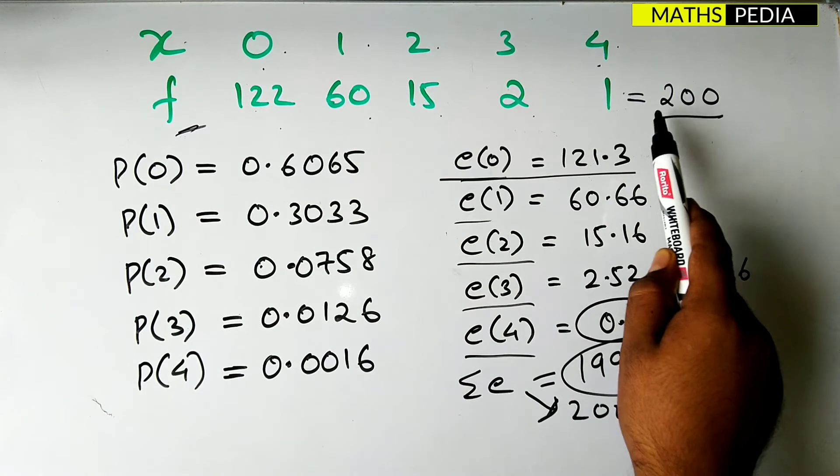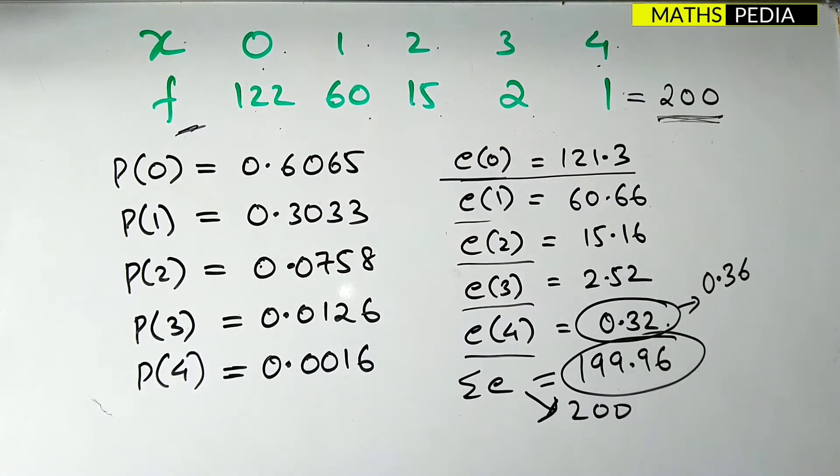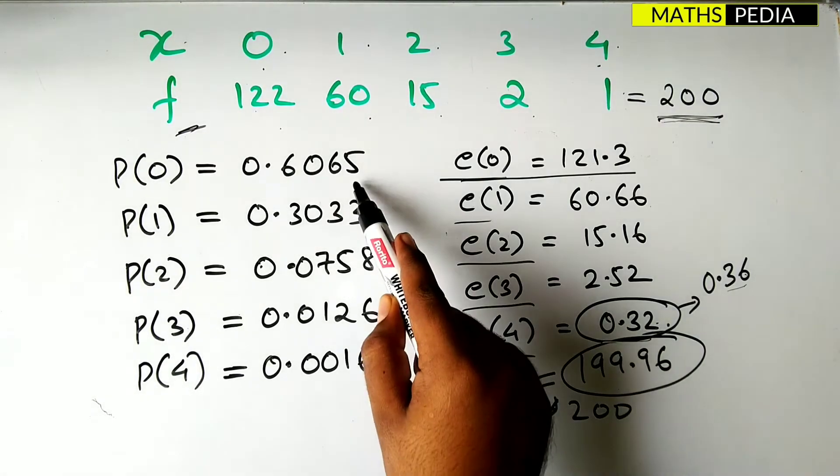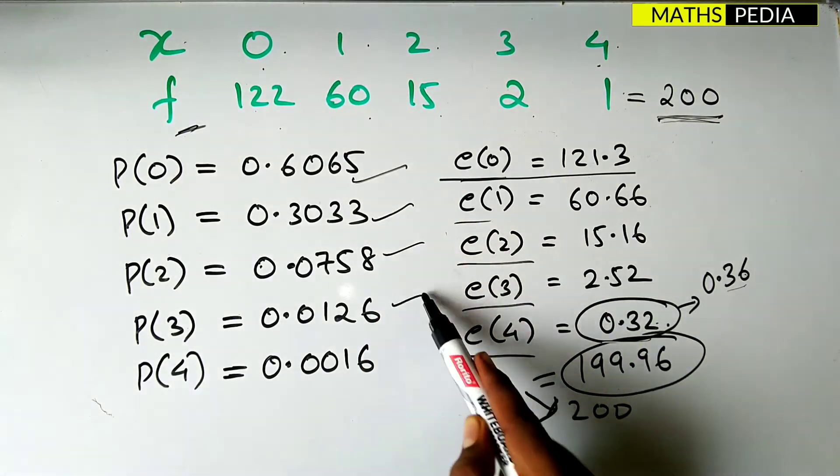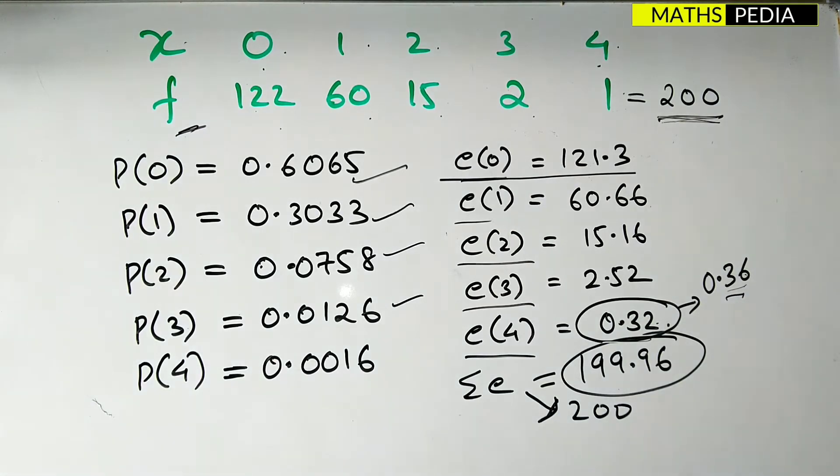So that it will match the summation of f. Summation of f is 200. So in order to make both equal, I have just increased the decimal value. That means 2 to 6. That's it. Okay. So this is a little bit adjustment. Anyways this is all approximated values. So you can just adjust the decimal values. It doesn't matter.